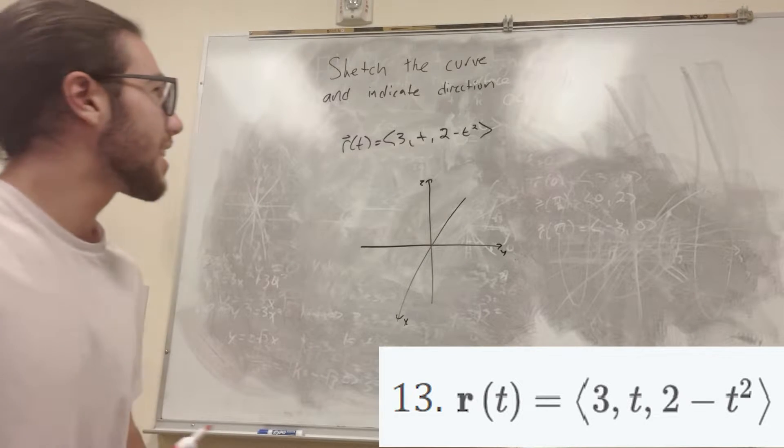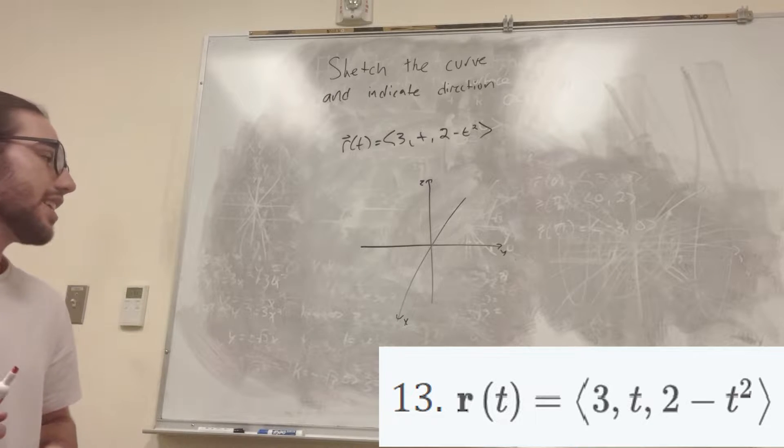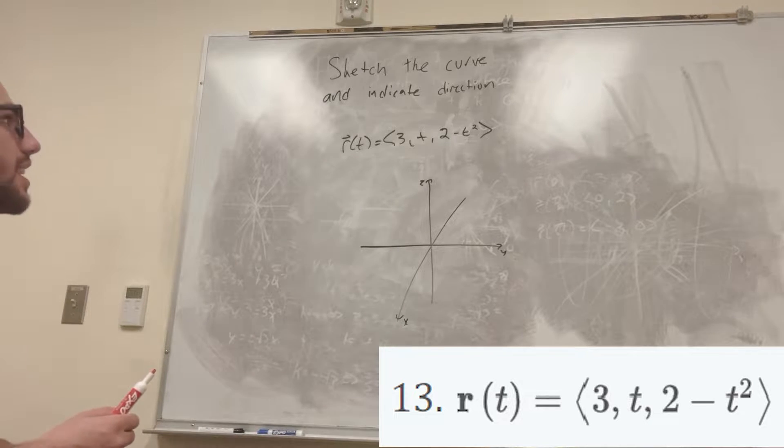What's up, Cal gang? Today we are going to be sketching a curve and indicating its direction. So it gives us a vector r(t), and it's equal to ⟨3, t, 2 - t²⟩.